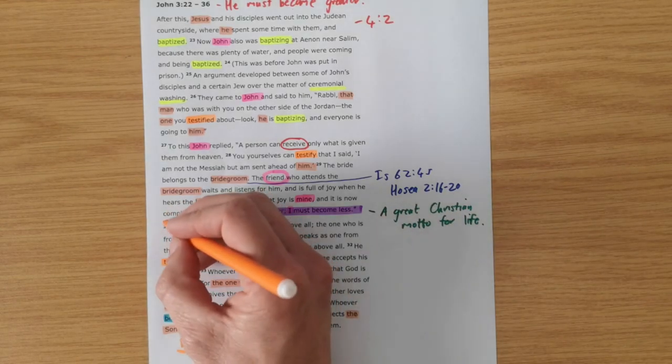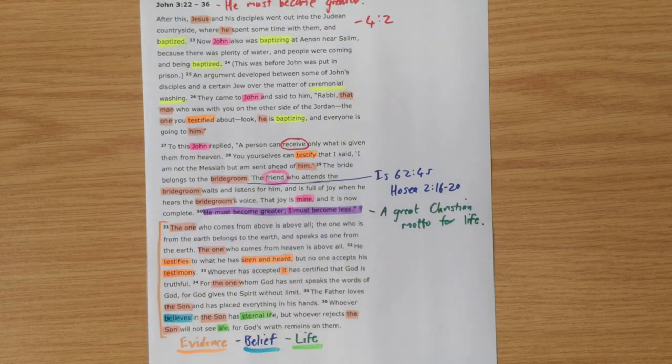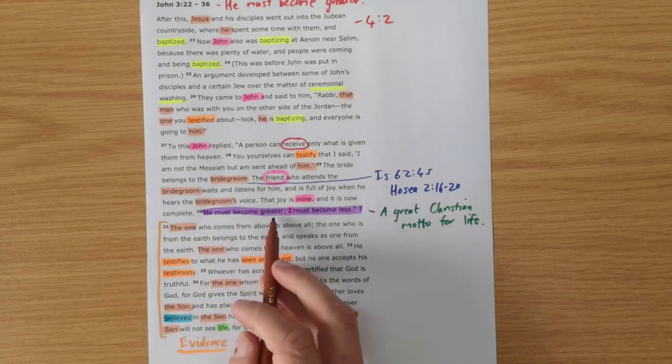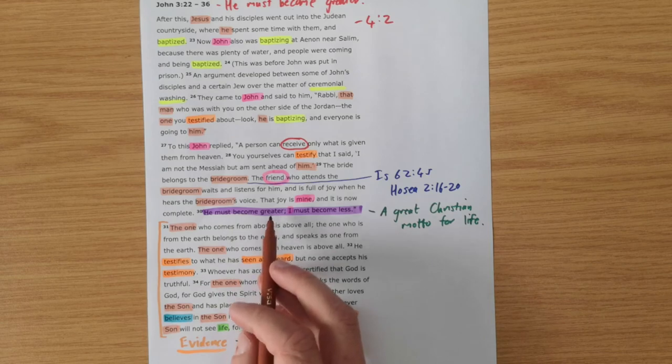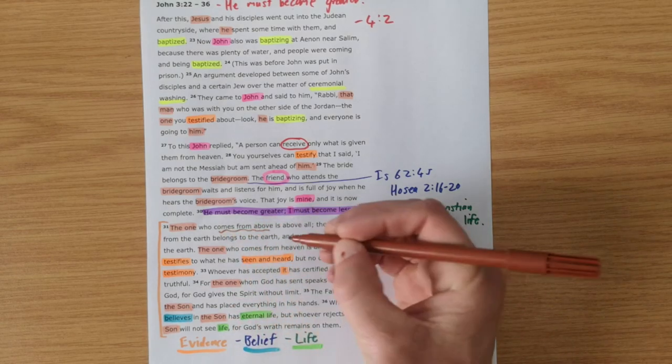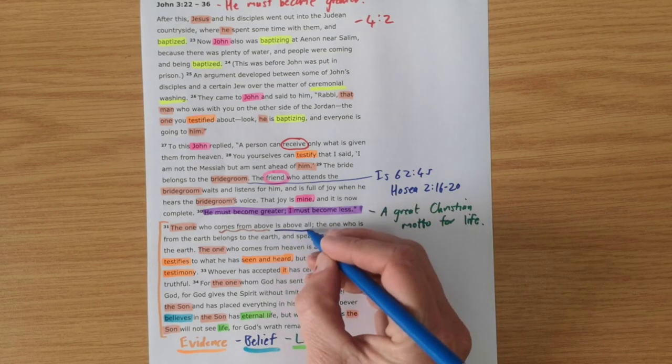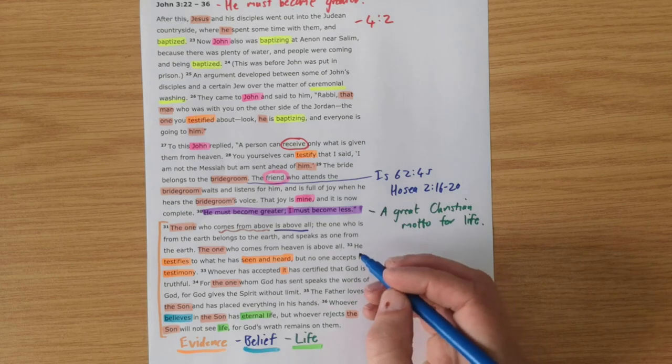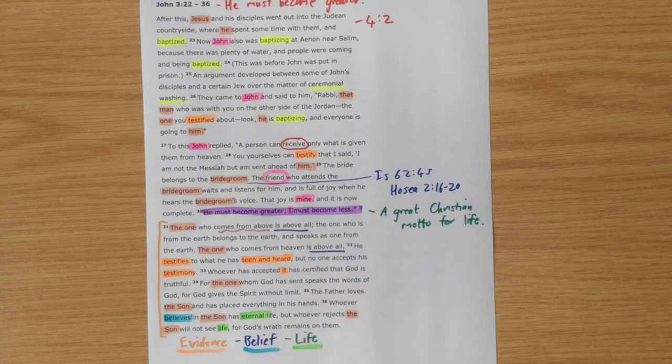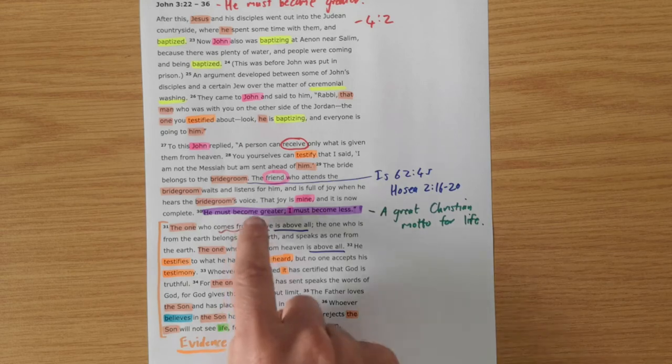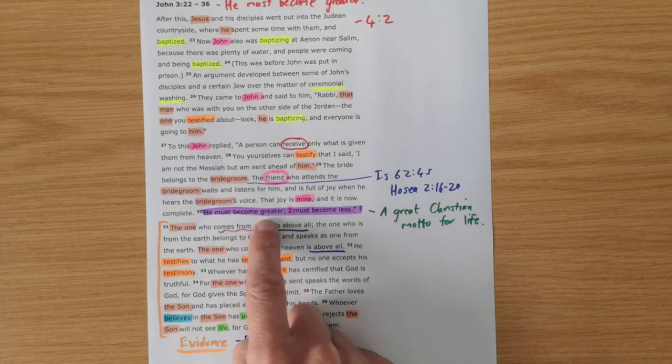From verse 31 to the end of the chapter, it's as if John, the writer of the gospel, is summing up so much of what we've seen already and he is reminding us of big things that we've seen about Jesus. He says he must become greater because he is already greater. He's the one who has come from above. So he is above all. We see that above all is repeated twice. He is above all. There's no one greater than him. So he must become greater. His greatness needs to be increasingly known.